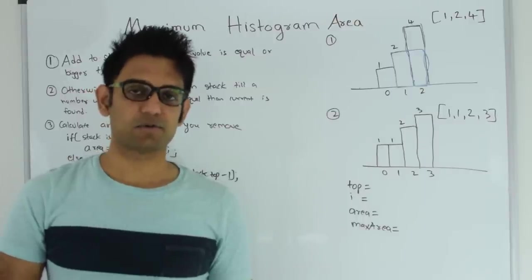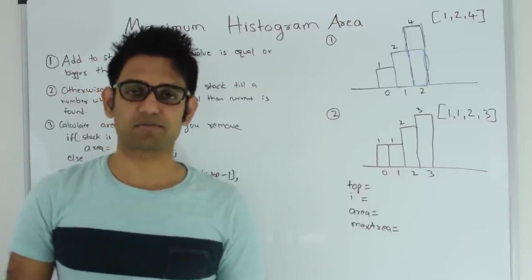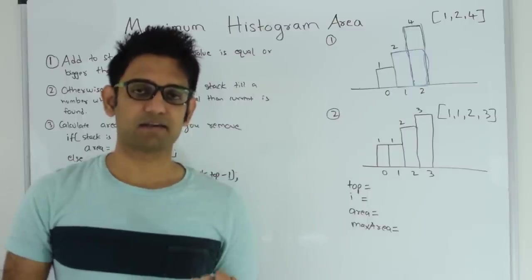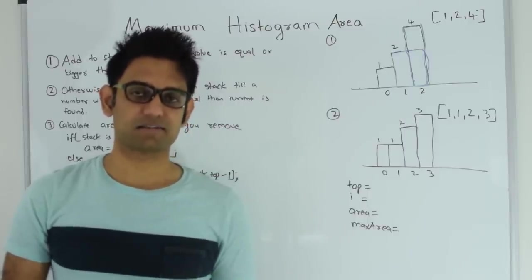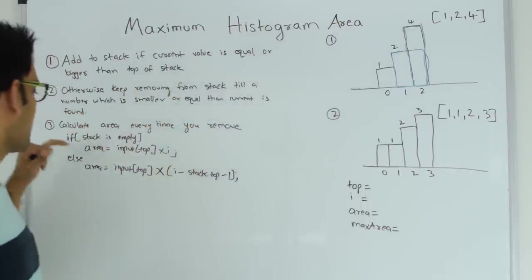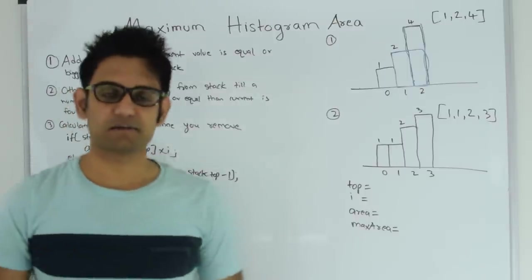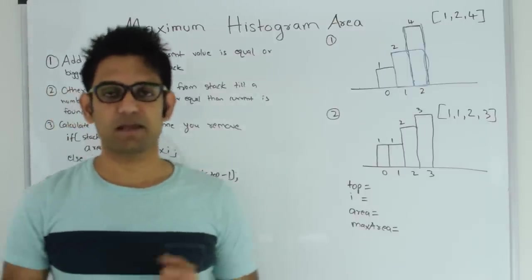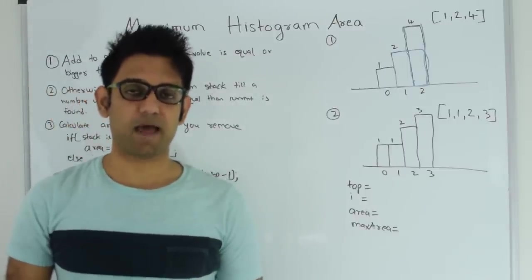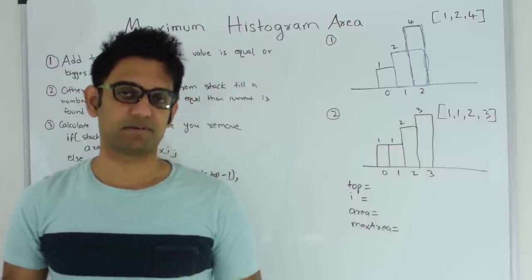If the current value is less than the top of the stack, keep removing elements from the stack until the top of the stack is less than or equal to the current value. While removing elements from the stack, apply a simple formula to find the area, and if this area is greater than the max area, then max area becomes this area.